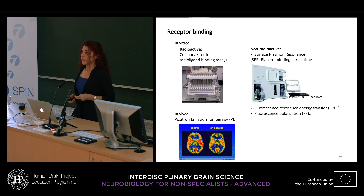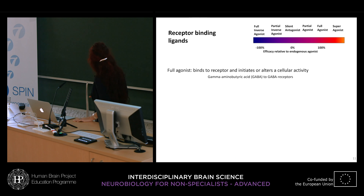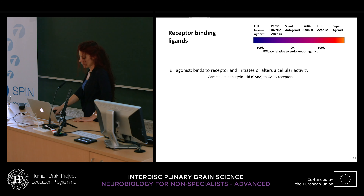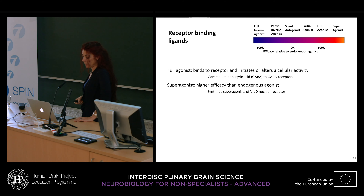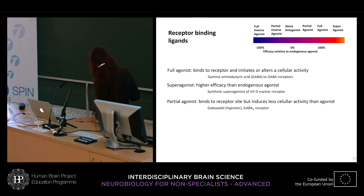There is a broad range of ligands depending on what they do at the receptor. Full agonists bind to the receptor and initiate the cellular process — they are usually the endogenous ligands, for example gamma-aminobutyric acid binding to GABA receptors. Super agonists are usually synthetic drugs that produce higher efficacy than endogenous agonists — one example being synthetic super agonists of vitamin D nuclear receptors. Partial agonists bind to the receptor but produce less cellular activity than full agonists — an example being gaboxadol, a hypnotic that binds to GABA receptors.